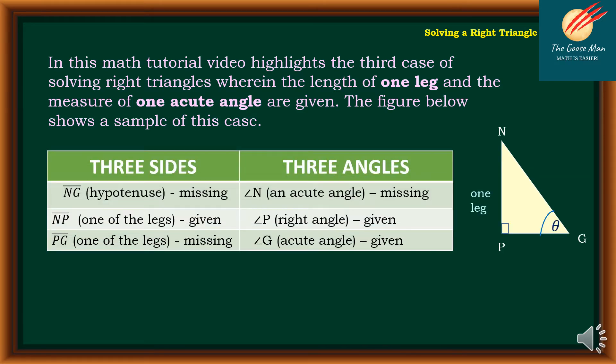We have triangle PNG. The given is one leg and angle G, or we will name that as theta. For the three sides, we have NG hypotenuse is missing, NP one of the legs is given, and PG one of the lengths is missing.